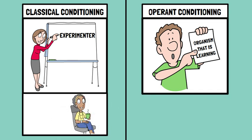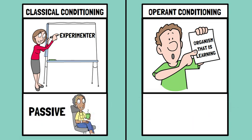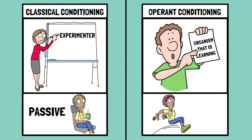Thus, for unconditioned stimulus in classical conditioning, the organism remains passive, while in operant conditioning, the subject has to be active in order to be reinforced.